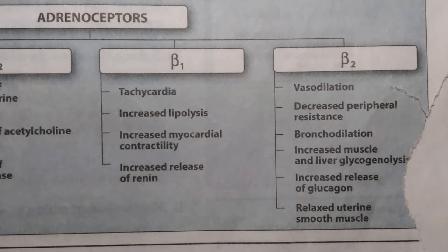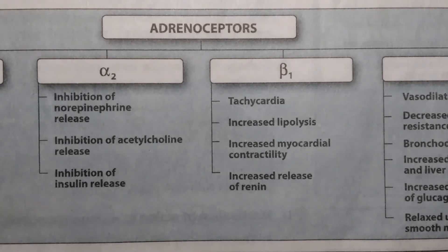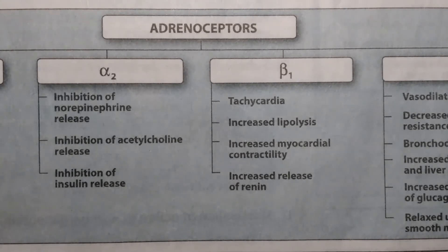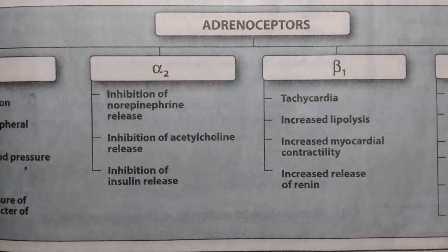Beta 2 receptors also relax uterine smooth muscle. We study these actions caused by activation of these receptors because it is useful to organize physiological responses to adrenergic stimulation according to receptor type, since many drugs preferentially stimulate or block one type of receptor. Knowing the receptor type a drug acts on allows us to predict the effects caused by drugs we prescribe to patients.